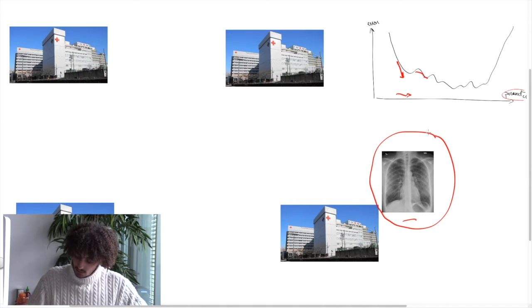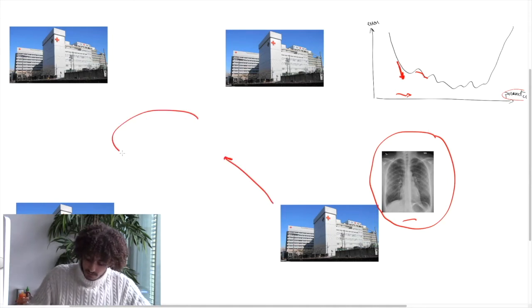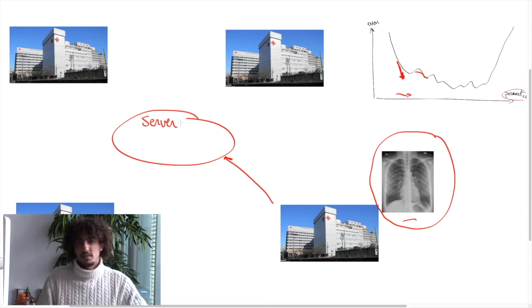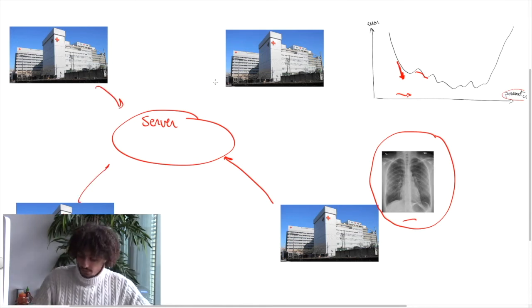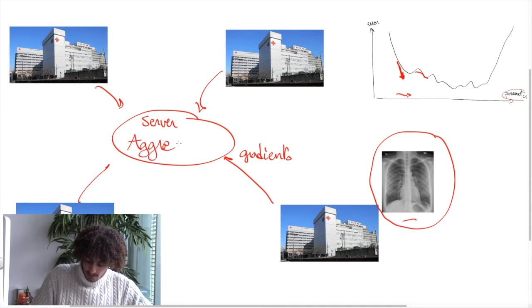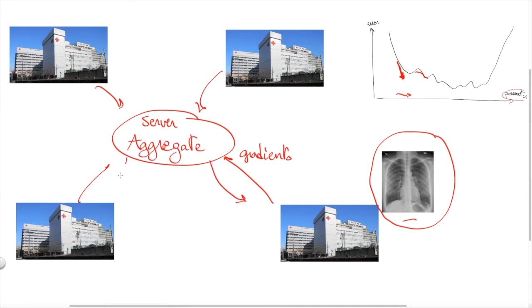So what they can do is individually estimate a gradient and send it to some common node. We would call this a server, but it can just be an abstraction. Each hospital can actually be a server gathering gradients from other hospitals and they will send gradients, not actual data. This server will aggregate the gradients and then send the new model, the new value of the parameter that was collectively learned by those hospitals.